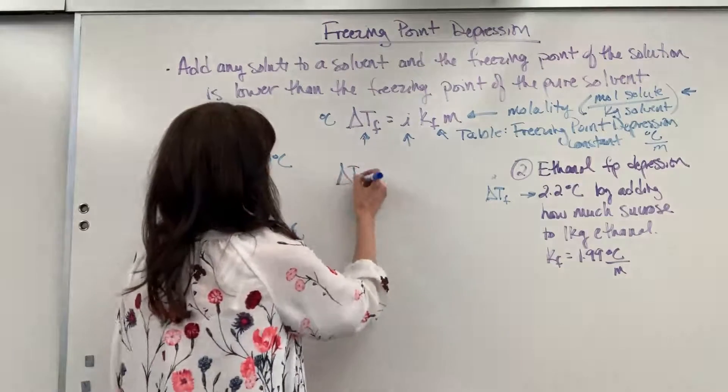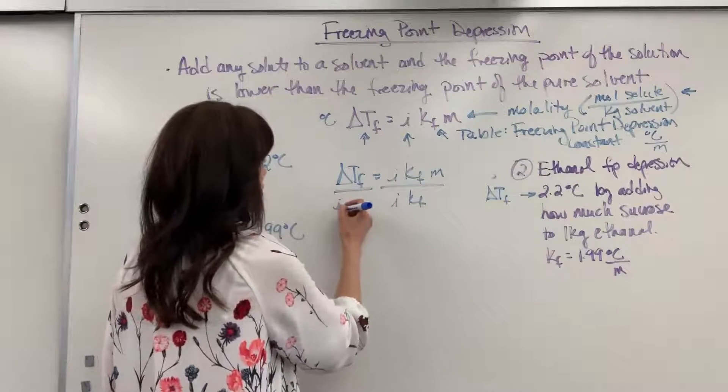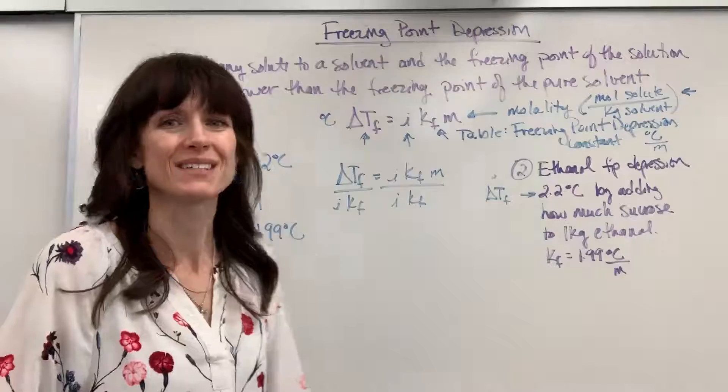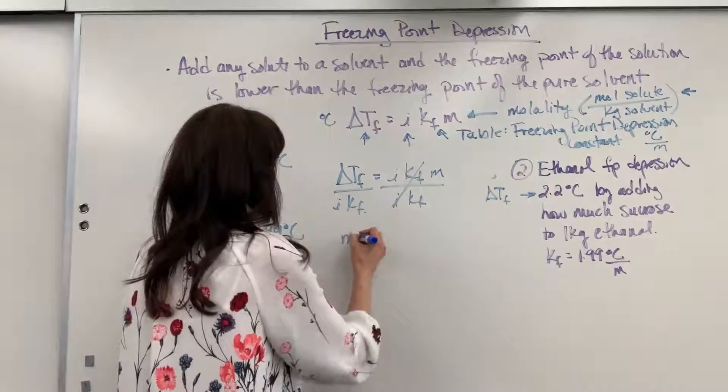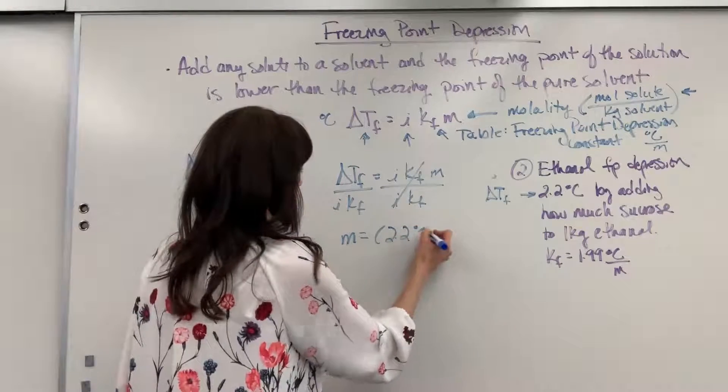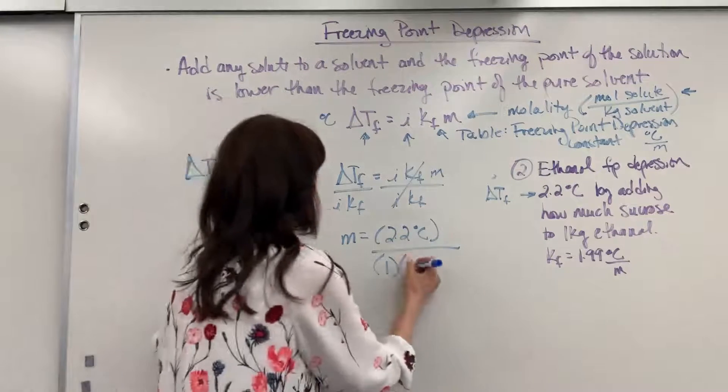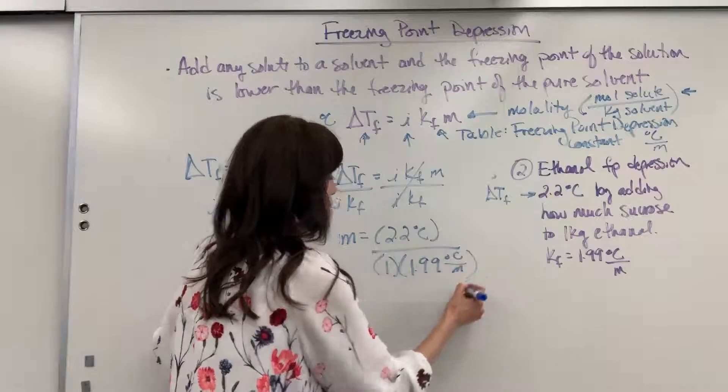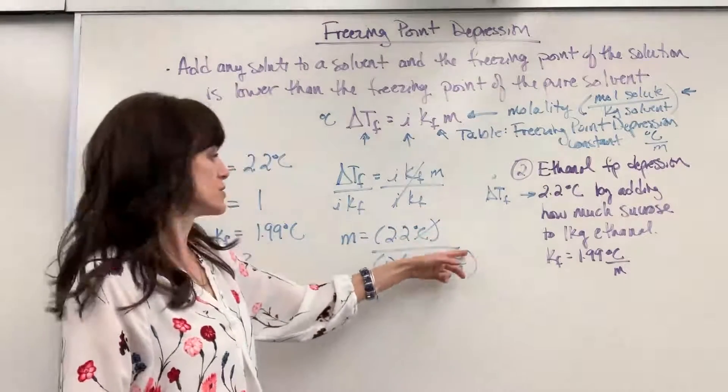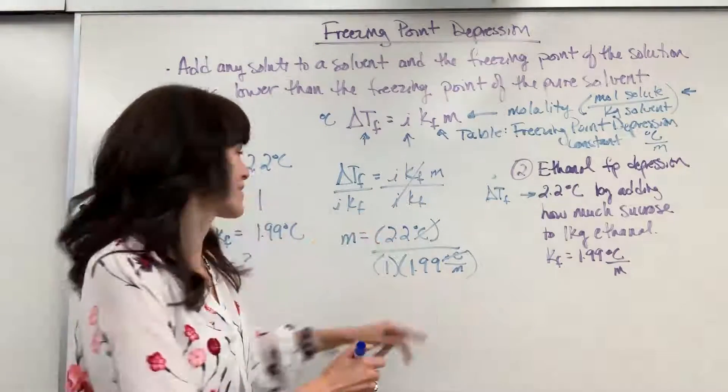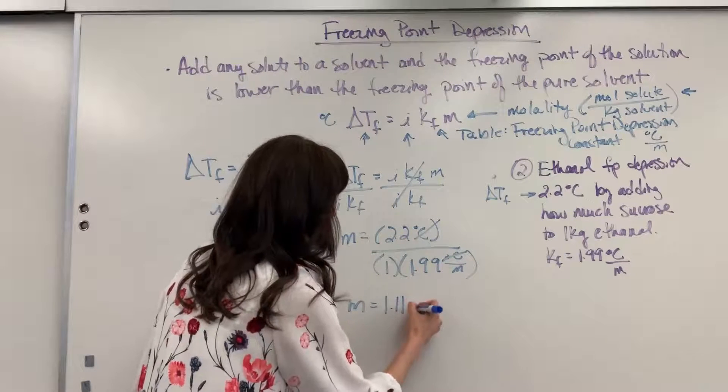Change in temperature equals I, K, F, M. I'm going to go ahead and solve for the molality. Just a little side note. I is unitless. No unit for I, just number of particles. So we are going to get molality equals change in temperature 2.2 degrees C divided by the number of particles. Sucrose is a non-electrolyte, so that's 1, times the freezing point depression, 1.99 degrees C divided by M. Look at our units. The degree C cancels. Remember when you have a fraction divided by a fraction, reciprocate, multiply. So degree C cancels, and we're going to end up with molality in the numerator. So 2.2 divided by 1 times 1.99. It's going to give us 1.11 molal.